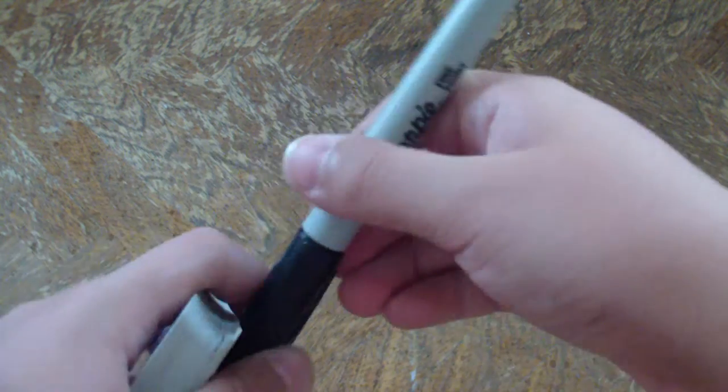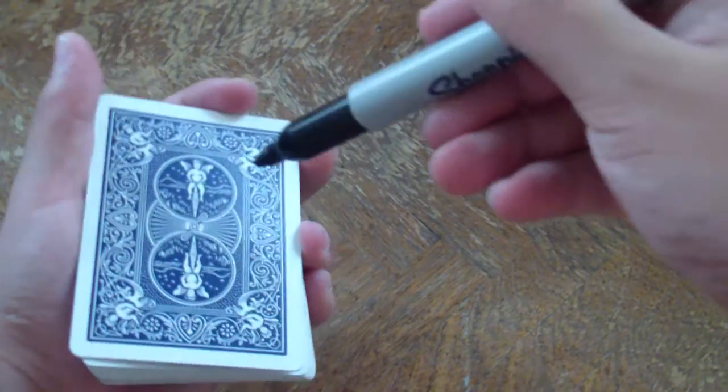Next what you want to do is do a double lift and hold the break. Now ask the spectator to sign the back of this card. Just so that I was scribbling it.